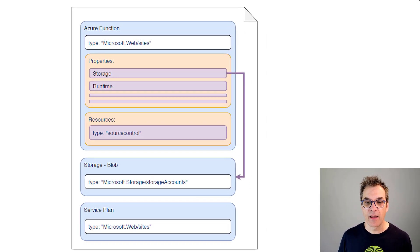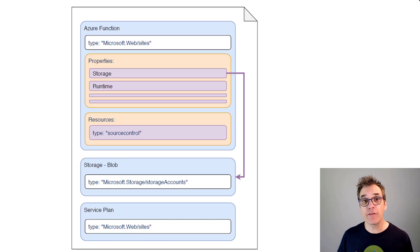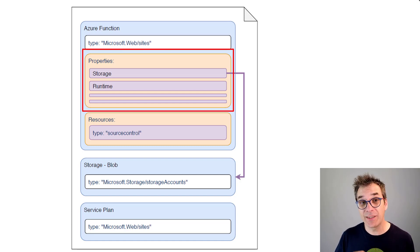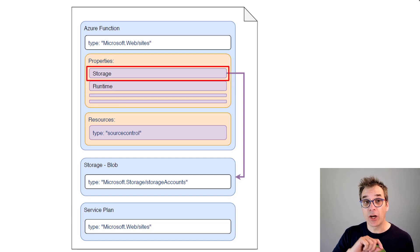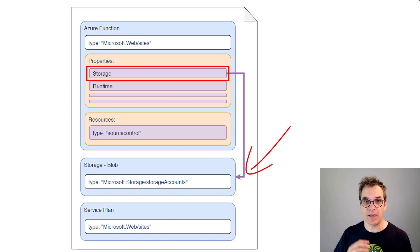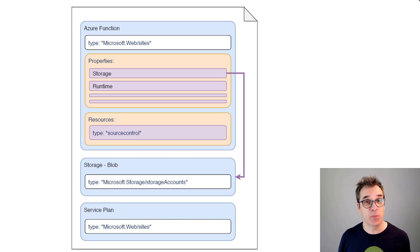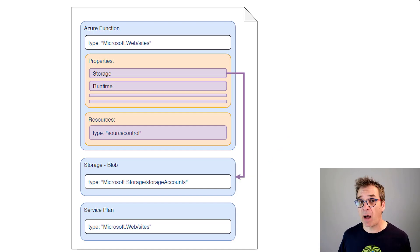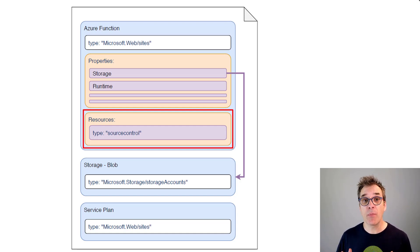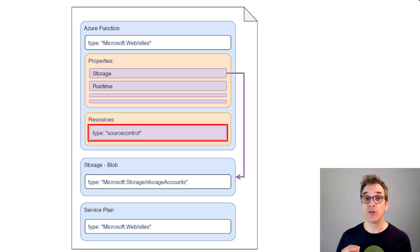If we look just a little bit more in detail, inside the function resources I will have a list of properties. One of these properties will be the connection string - the reference to the blob storage that will be created at the same time. Then I can also specify the runtime, for example whether I'm running Java, JavaScript, PowerShell, or .NET.